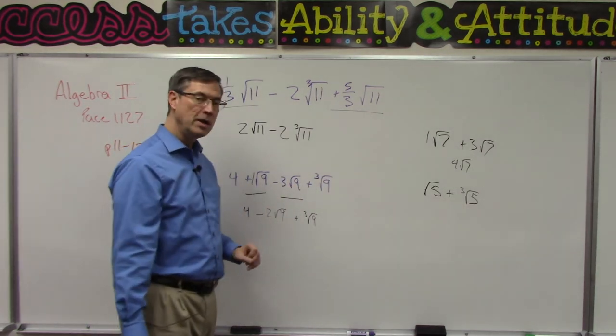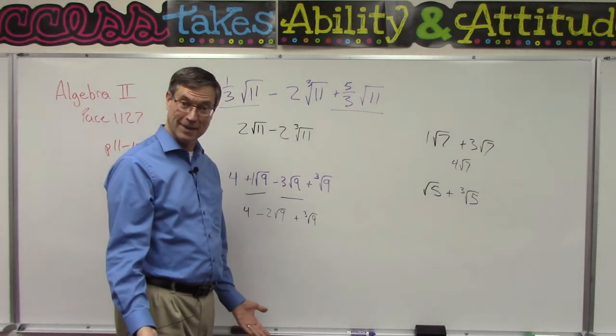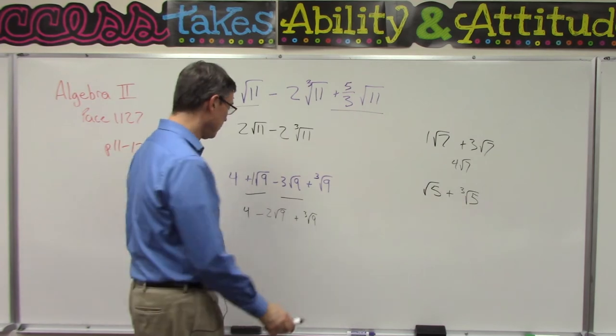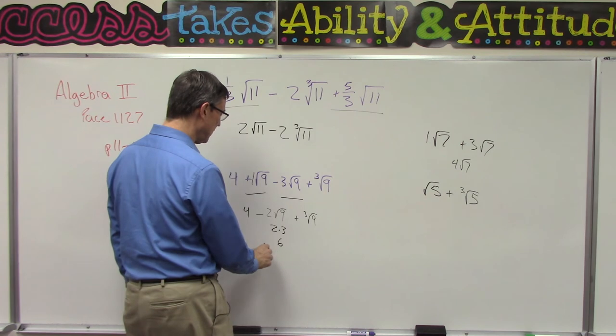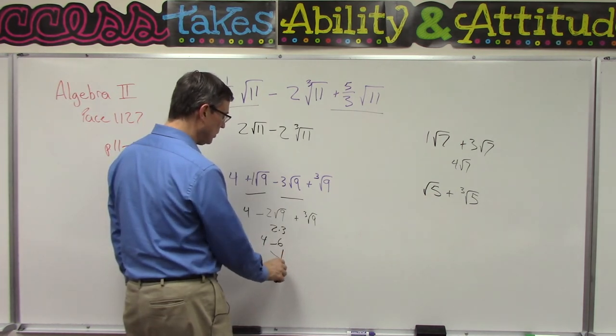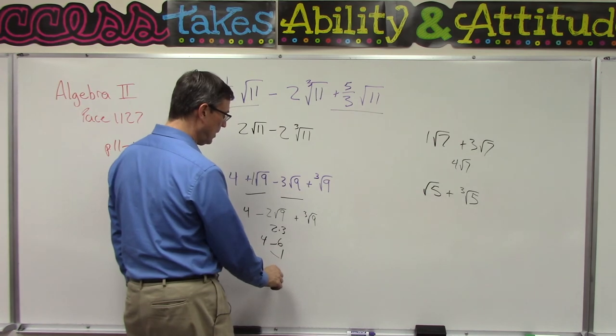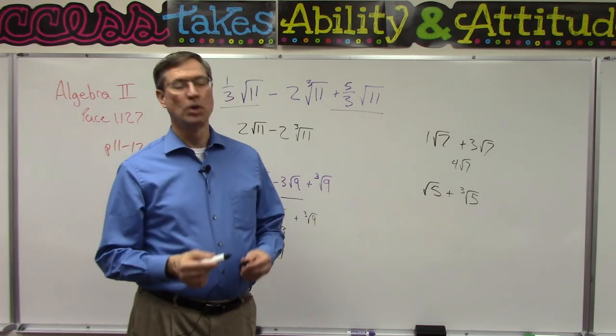Now you think you're done, but think about it: what is the square root of nine? Three. So actually this is two times three, which gives me six. So now I have four minus six, which you can simplify and get your answer, plus the third root of nine.